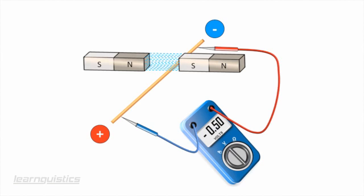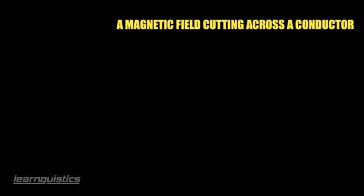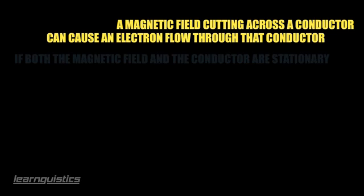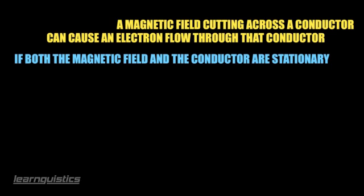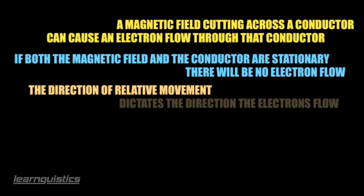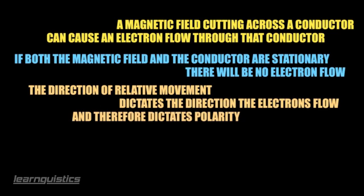Before moving on, let's briefly summarize the important points covered so far. First, when a magnetic field cuts across a conductor such as a piece of wire, it can cause electrons to move, thus creating a flow of electrons, which is a flow of electricity. If the magnetic field and the wire are stationary, then there is no relative movement between the magnetic field and the electrons, so there will be no movement of electrons and therefore no electric current. Finally, the direction of relative movement between the magnetic field and the wire will dictate which direction the electrons flow, and therefore which direction the electric current will flow — and also which end of the wire is positive or negative.